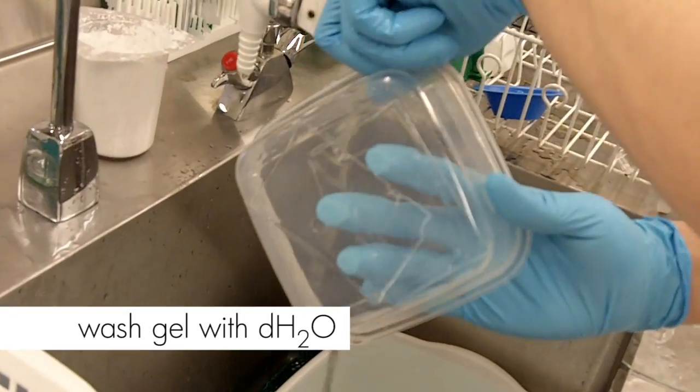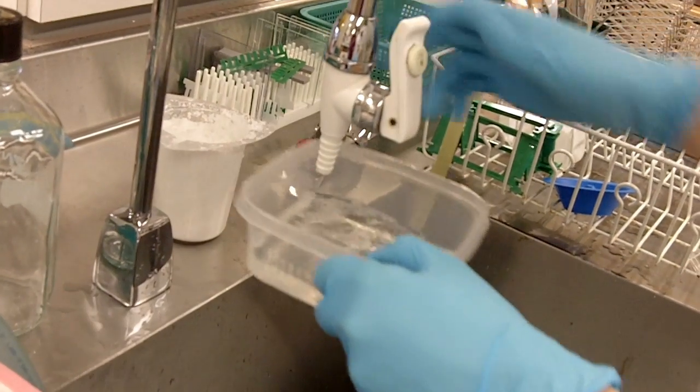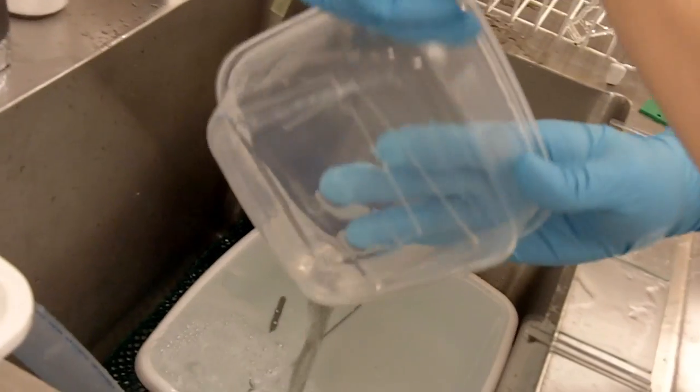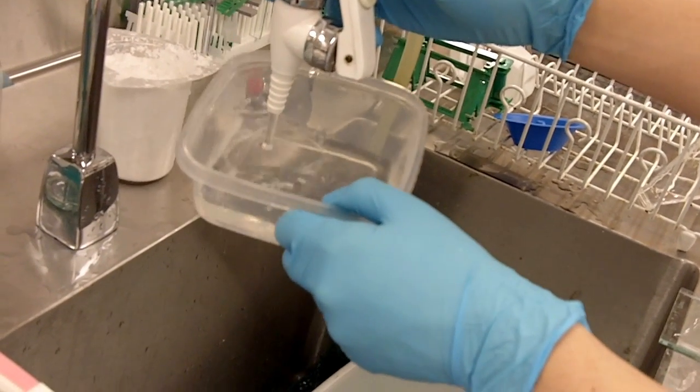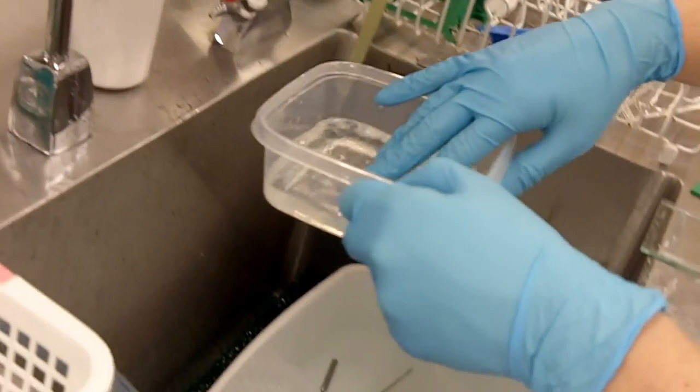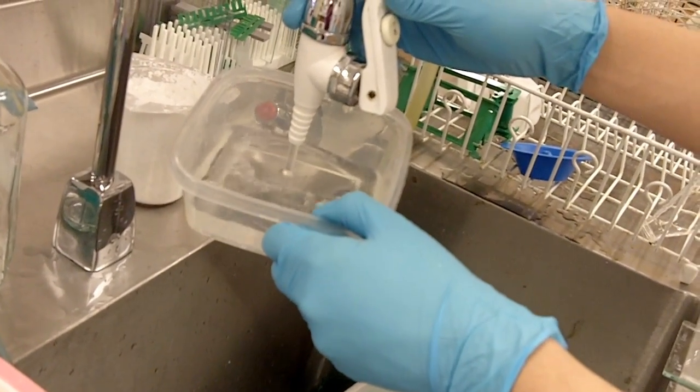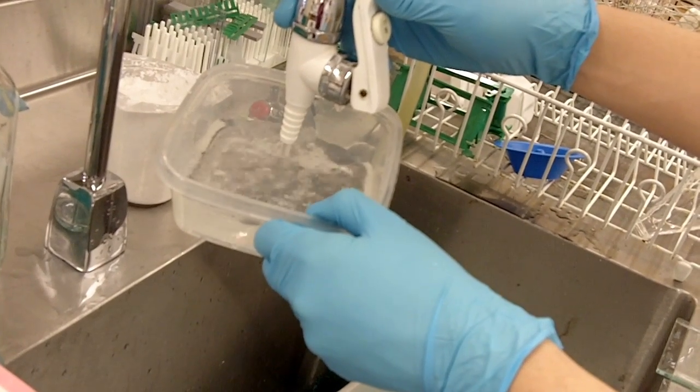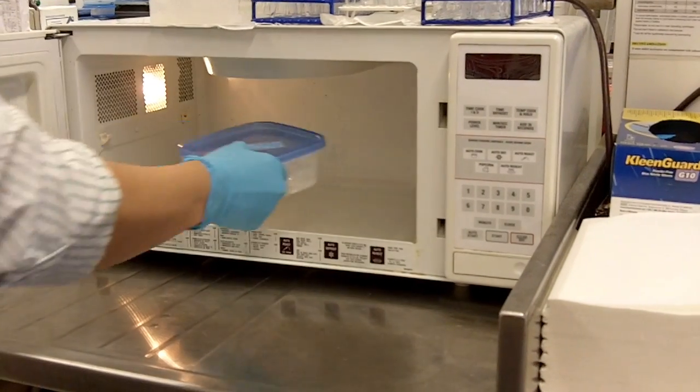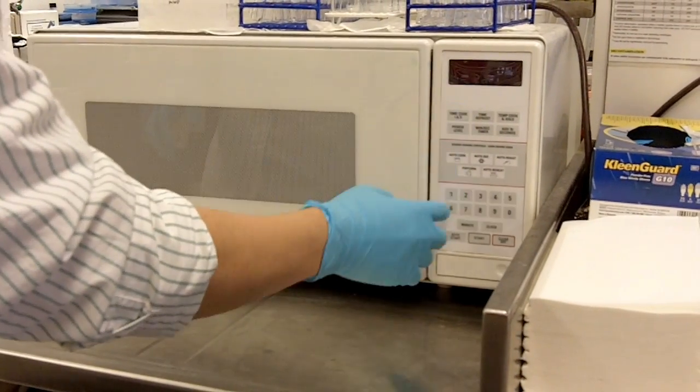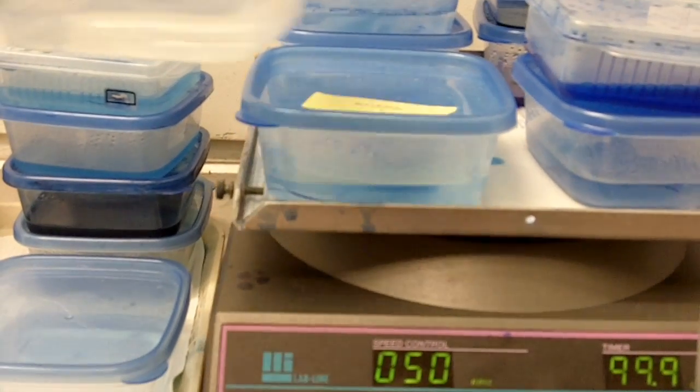You want to wash your gel a few times with distilled water. Make sure you put the water in gently so it doesn't break the gel. When you pour the water, hold on to your gel with your finger so it doesn't come out and break into the sink. Before you microwave, we want to fill up the container with water and we'll microwave it for about a minute, and we'll let it shake on the shaker for five minutes.